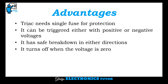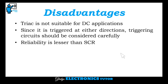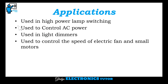The advantages of TRIAC are: it needs only a single fuse for protection; it can be triggered with either positive or negative voltages; it has safe breakdown in either direction; and it turns off when the voltage is zero. Disadvantages are: TRIAC is not suitable for DC applications; since it is triggered in either direction, the triggering circuit should be designed carefully; and its reliability is lesser than SCR. Applications include high power lamp switching, controlling AC power, light dimmers, and controlling the speed of electric fans and small motors.